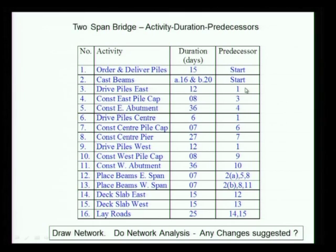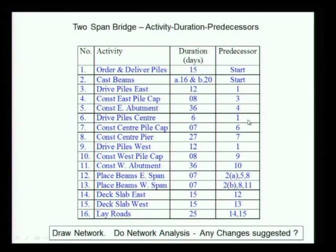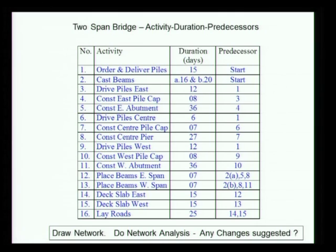Driving piles is after delivery. I can construct the pile cap only after driving. East abutment comes after pile cap. Pile center after delivery, pile cap after that, the center pier after the pile cap is done. Piles west — drive and construct west pile cap. Now east span is based on the west span, and it depends on center and east.